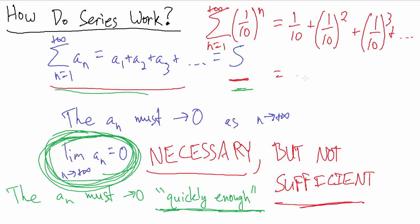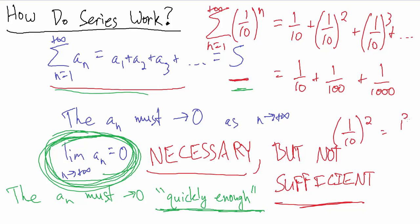This equals one-tenth plus one over one hundred, plus one over one thousand. Because one-tenth squared is one squared over ten squared — one squared is just one, ten squared is a hundred — so that simplifies there. And one-tenth cubed simplifies to one over one thousand, plus dot dot dot.